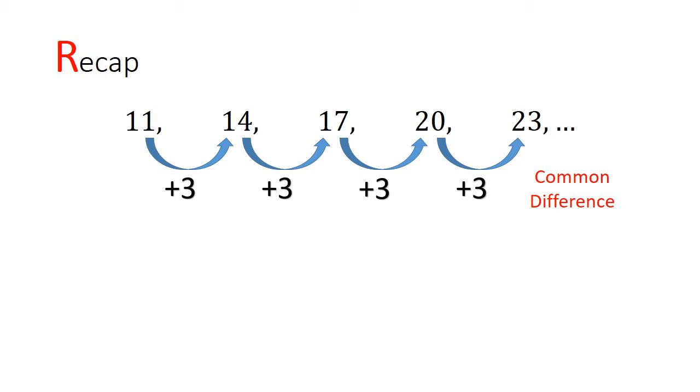Let's begin with a recap of the last lecture. Have a look at this sequence: 11, 14, 17, 20, 23. This is an example of an arithmetic progression. Each successive term increases by 3. We can call this increment of 3 the common difference.